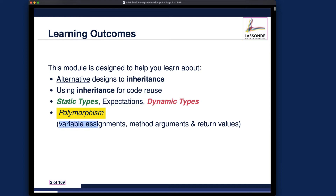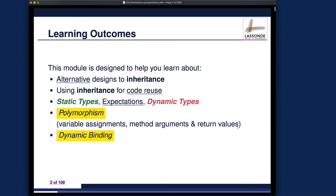We'll talk about polymorphism from different angles. We'll start with what polymorphism really means in terms of variable assignments, especially for reference variables — polymorphism only occurs in the case of reference variable assignments, and also method arguments and return values. That's a more advanced context. We'll also talk about dynamic binding. Polymorphism and dynamic binding will be the biggest two takeaways for the inheritance lecture.